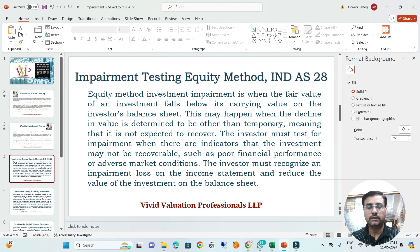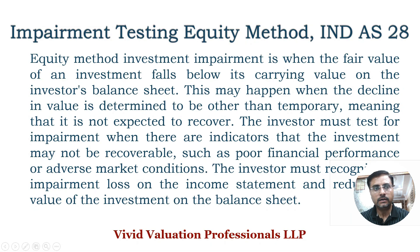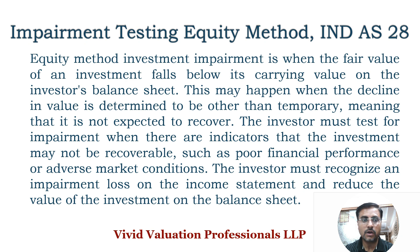In the case of the equity method — suppose you have invested in an associate company following Ind AS 28 — impairment is required when the fair value of the investment falls below its carrying value on the investor's balance sheet. This may happen when the decline in value is determined to be other than temporary; in some cases it may be permanent and you need to recognize impairment loss and adjust it from the investment in associate. The investor must test for impairment when indicators exist, such as poor financial performance or adverse market conditions, and must recognize an impairment loss on the income statement and reduce the value of the investment on the balance sheet.